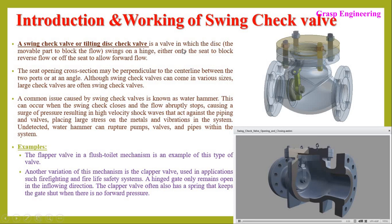A swing check valve, or tilting disc check valve, is a valve in which the disc — the movable part to block the flow — swings on a hinge either onto the seat to block reverse flow or off the seat to allow forward flow. The seat opening cross section may be perpendicular or at an angle to the centerline. A common issue caused by swing check valves is known as water hammer, which occurs when the swing check closes and the flow abruptly stops, causing a surge of pressure resulting in high velocity shock waves that act against the piping and valves, placing large stress on the metal and vibration in the systems.